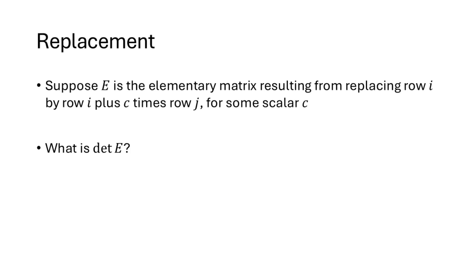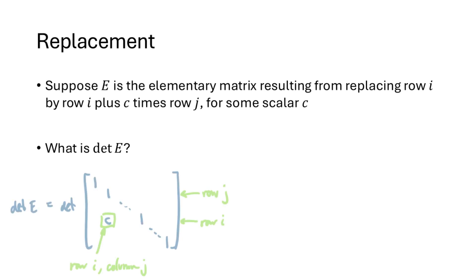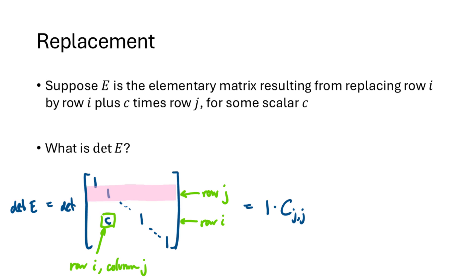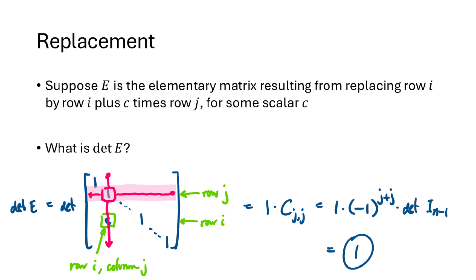For a replacement elementary matrix — the result of starting with the n×n identity matrix and replacing row i by adding c times row j — the matrix looks like the identity except for a c in the row i, column j entry. If we do cofactor expansion along row j, the only non-zero entry is 1 in position j,j, and the cofactor C sub j,j has negative 1 to the j+j equals 1. Crossing out row j and column j removes the only difference from the identity, giving the determinant of I sub n−1, which is 1. So the determinant of a replacement elementary matrix is 1.